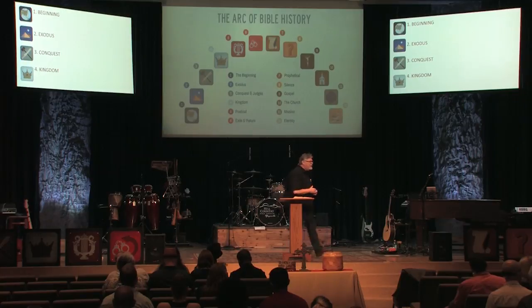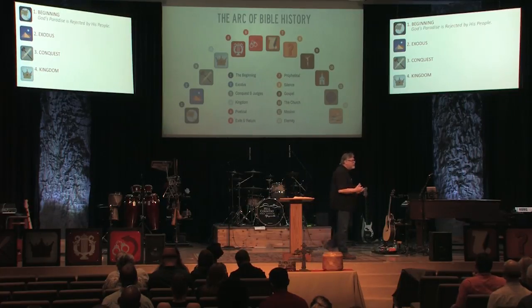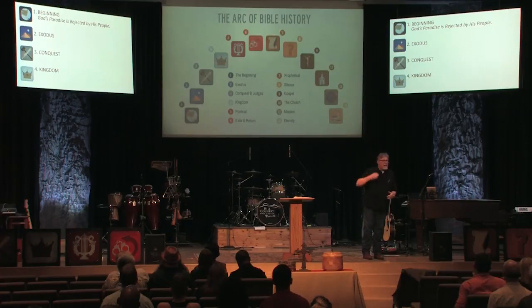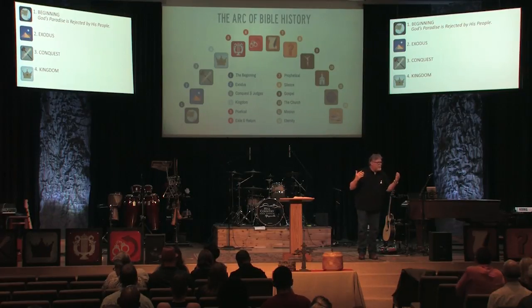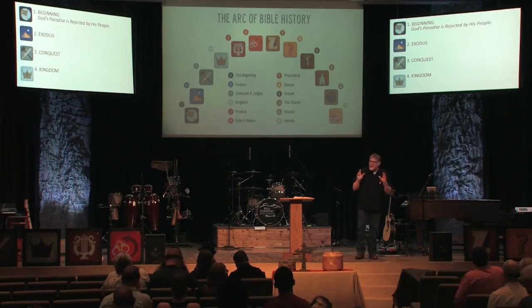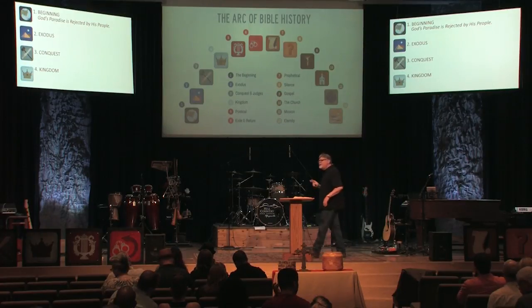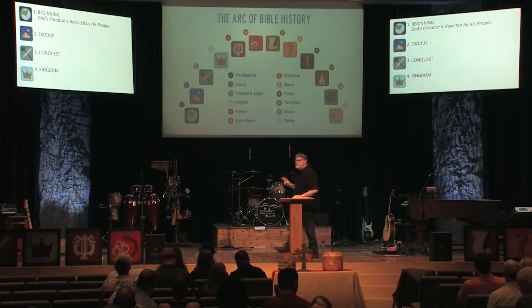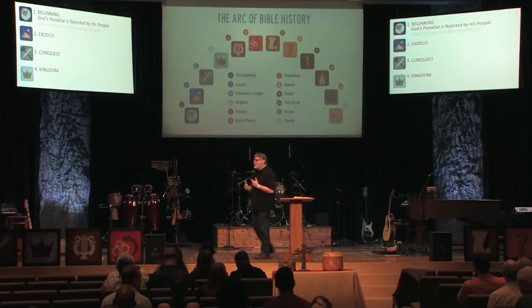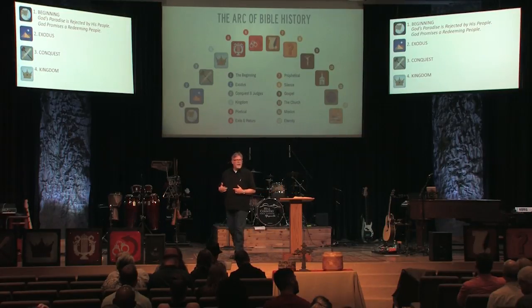The first icon reminded us of creation. There we remember two storylines: one is the idea of God's paradise that he created and put mankind in — and that paradise was rejected by mankind. They rebelled against this perfect environment, this perfect relationship that God set up with them. But second, we saw in Genesis that God set into motion a plan to redeem his rebellious people.